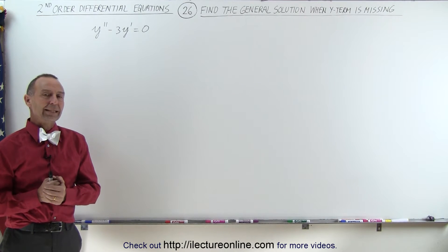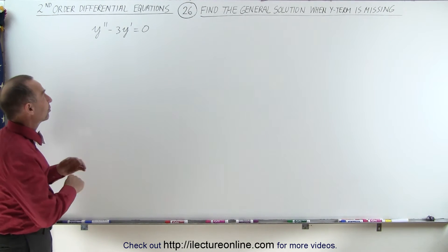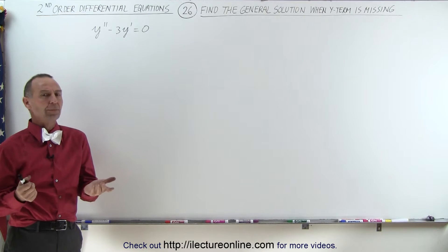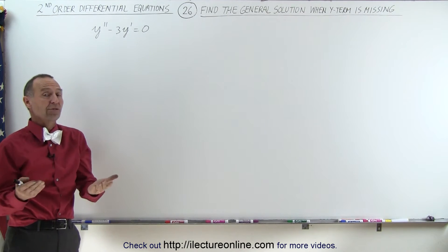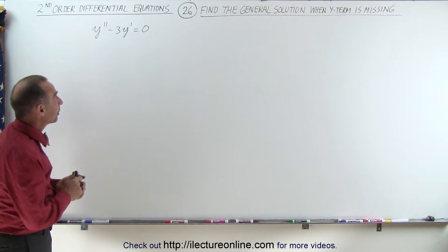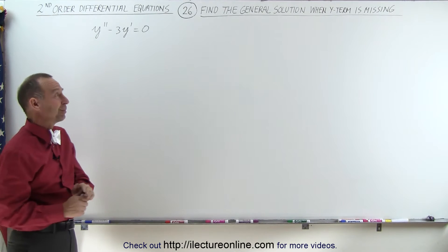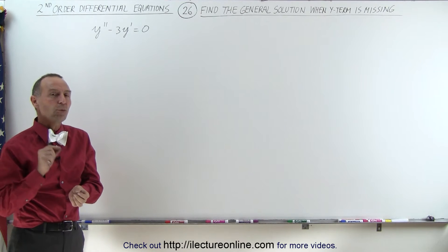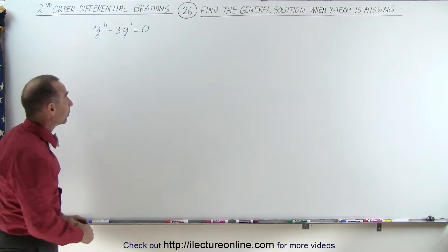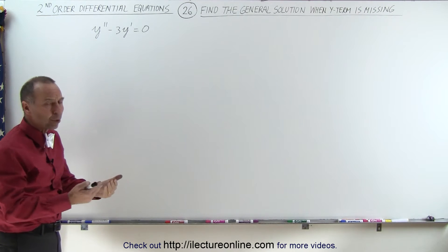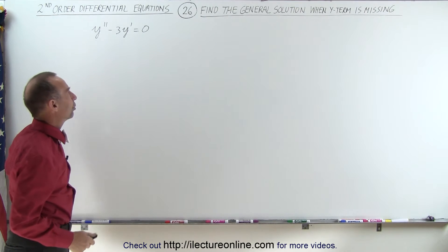Welcome to iLecture Online. In this example we're going to find the general solution when the y term is missing. Now you may say that's not a big problem — this has constant coefficients, so we can simply take the characteristic equation and find the solutions. But we're going to use a quite different technique that will also work when the coefficients are not constants but are actually functions of the variable. We're going to use a more general approach to finding the solution of an equation when the y term is missing.